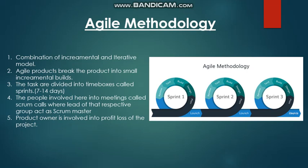In Agile, the product is divided into small incremental builds — Sprint 1, Sprint 2, Sprint 3, and so on. These tasks are divided into time boxes, meaning how much time is required for each sprint to be completed. It normally takes 7 to 14 days for a sprint to complete. After completion of a single sprint, the customer reviews the sprint product, which leads to an early release — one of the major advantages of Agile.